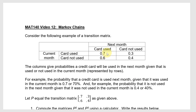The probability that the card is used next month, given that it was used in the current month. And for example, the probability that it is not used in the next month, given that it was not used in the current month, is 0.4, or 40%.